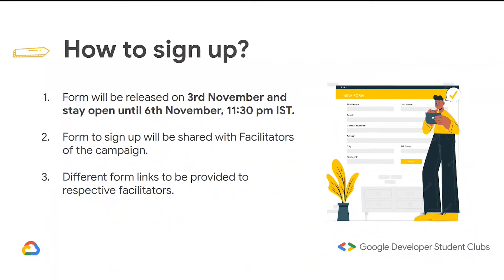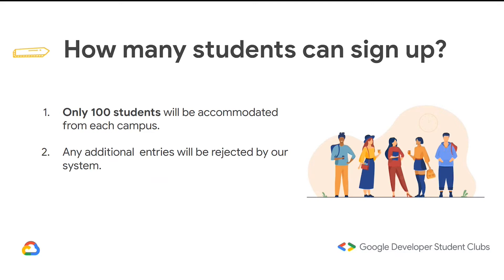How will you sign up? The form will be released on November 3rd and stay open till November 6th at 11:30 PM IST. Each campus — like GDSC AACB — has a different form link, so we are yet to receive ours; the form will be shared by the facilitators. Only 100 students will be accommodated from each campus, so the first 100 to sign up will be accepted.